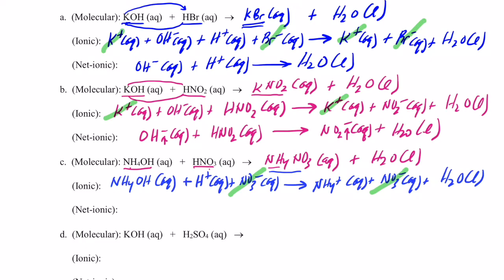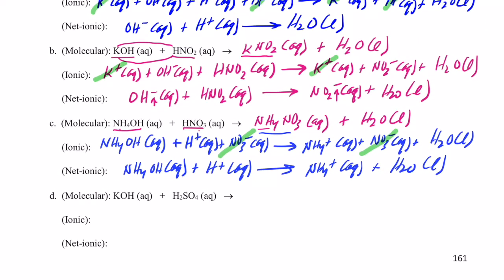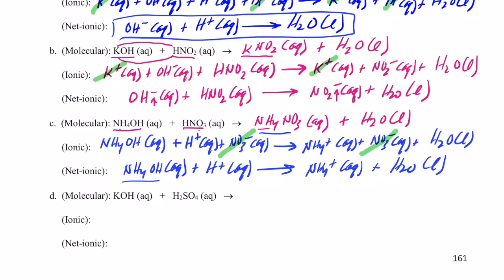The net ionic equation includes NH4OH and H+ on the reactant side, forming NH4+ AQ and water. You'll notice the net ionic equation does not reduce down to the same one as when we had a strong base with a strong acid. Instead, the weak base sticks together, and this proton gets together with the hydroxide — the hydroxide attracts that proton to form water — and I have ammonium ions remaining.